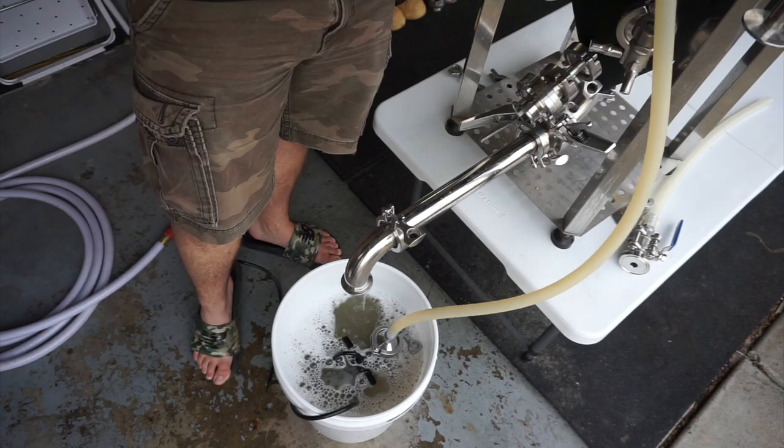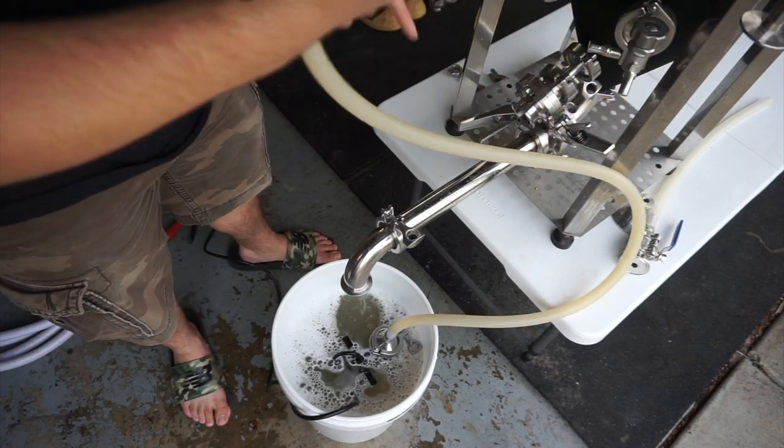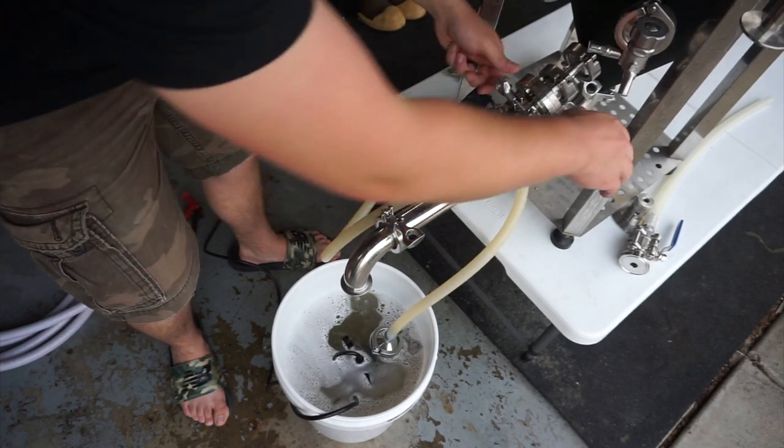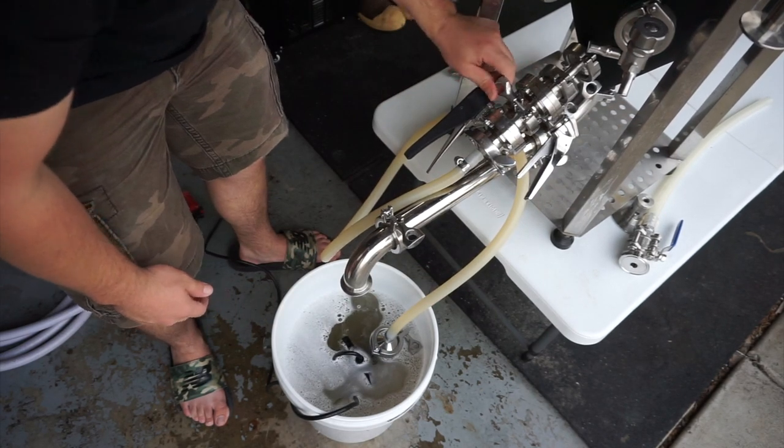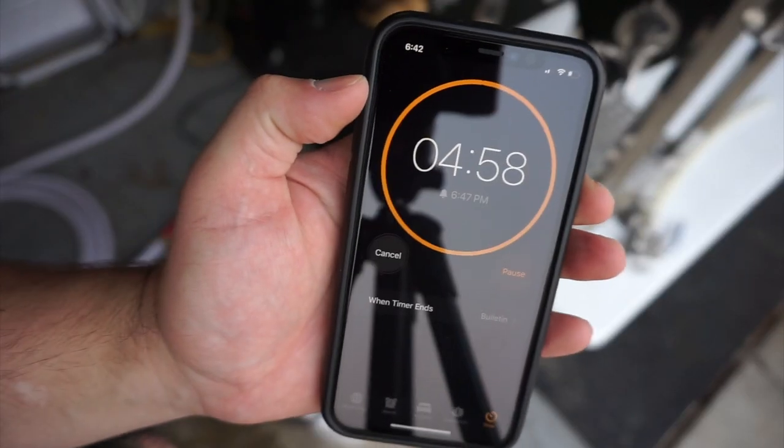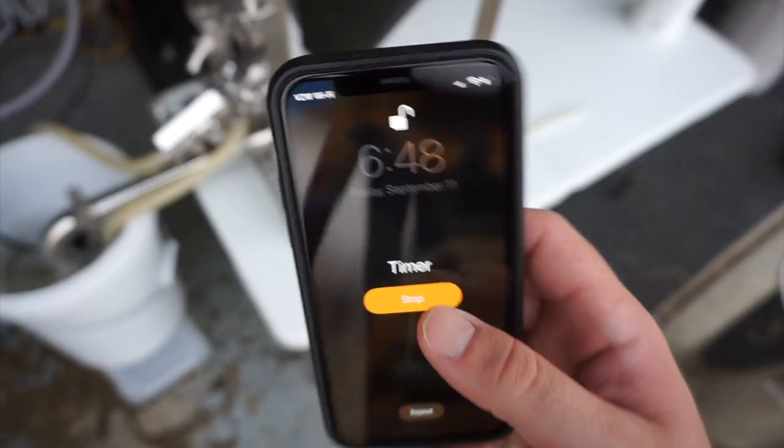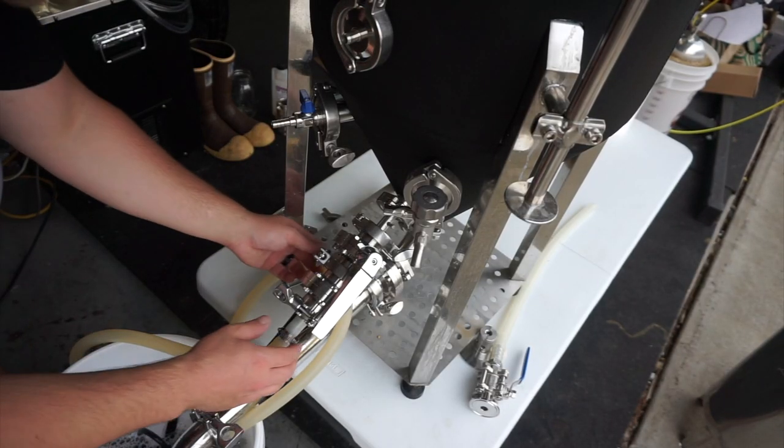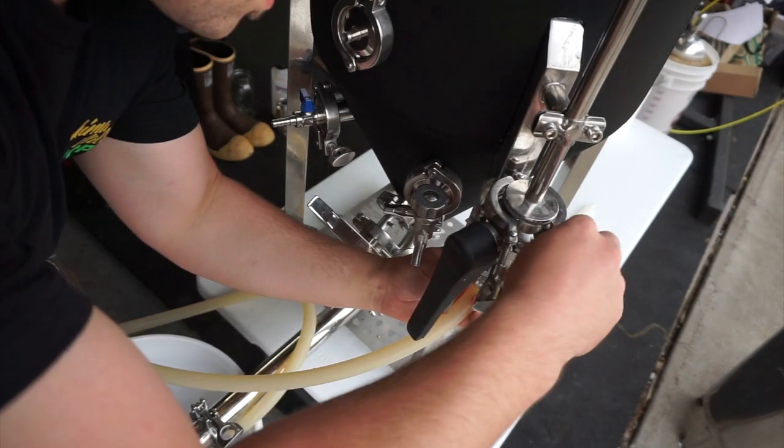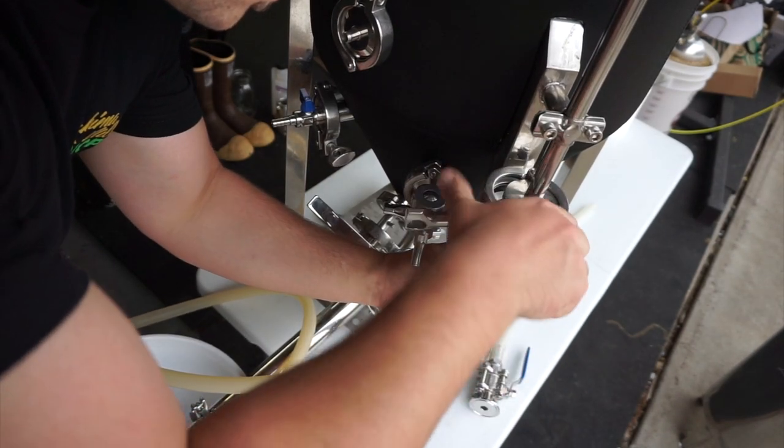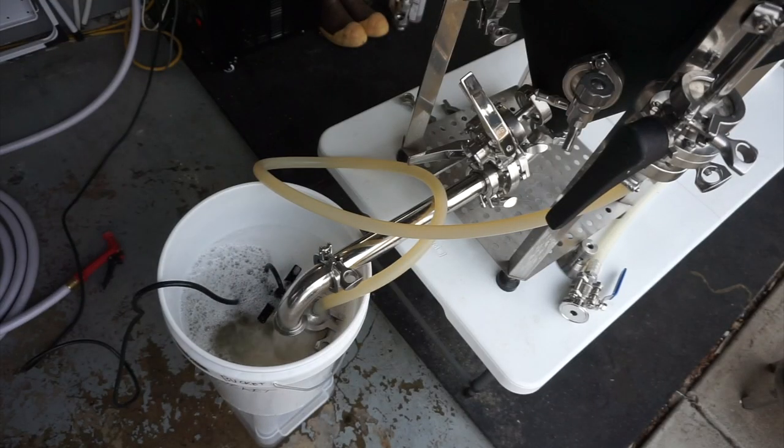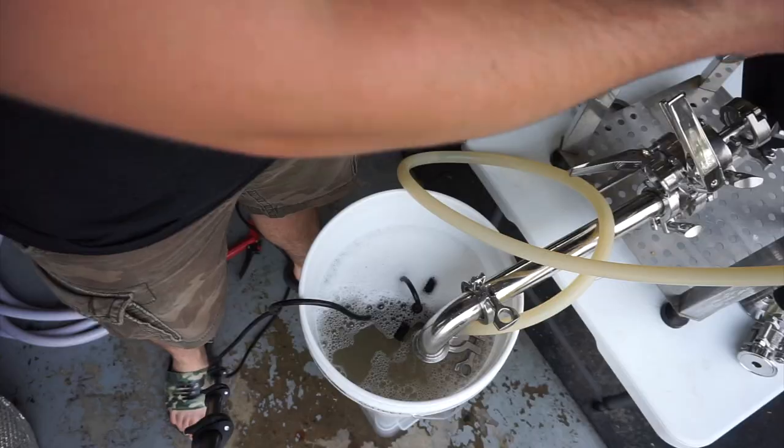Once the main cycle of the spray ball up the top is done, we have two more. We have one through the racking arm which ensures the inside of the racking arm is clean, and then we have another through the blow-off, each of which are five minutes. So in total, 30 minutes of cleaning time.